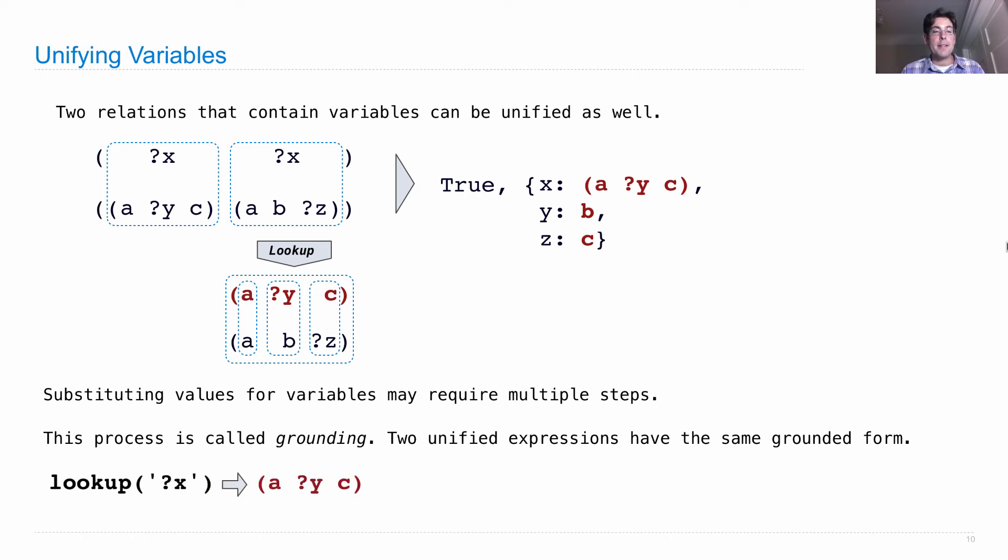So what do I mean by grounding? Well, if we just look up x in this environment, it will tell me it's a variable y c. If I look up y, it will tell me it's b. To ground x means to keep substituting the variables within it until I get only symbols and lists. And that would give me the list a b c, which requires multiple items in this environment.